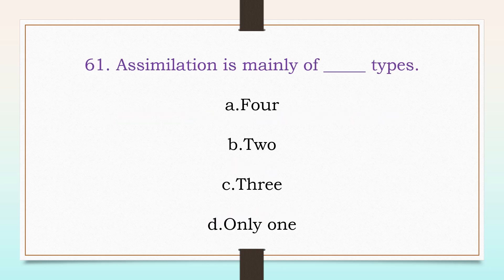First one: Assimilation is mainly of how many types? Options: 4, 2, 3, or only 1. The answer is: assimilation is of 3 types.